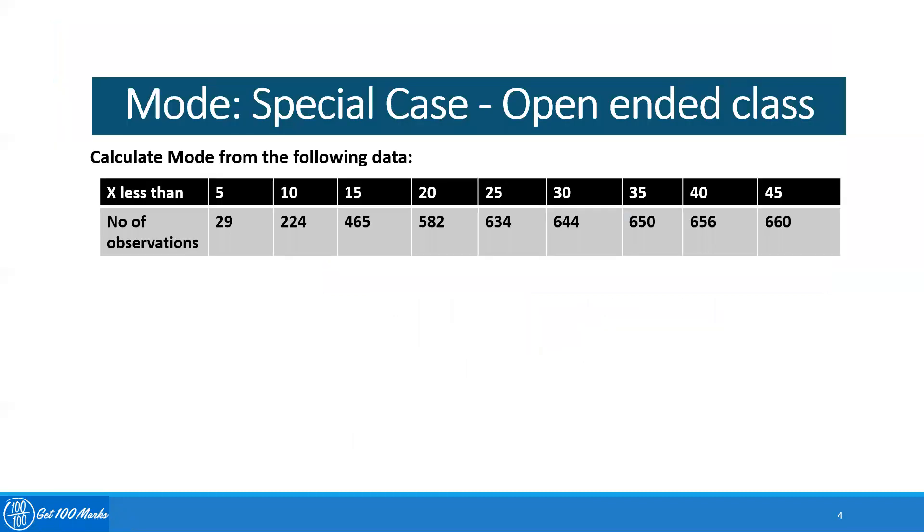I have taken one more special case: how to calculate mode for an open-ended class. What do you mean by open-ended class? The class interval is not given. Let's see the particular situation here. X less than 5, the number of observations is 29. X less than 10, it's 224.